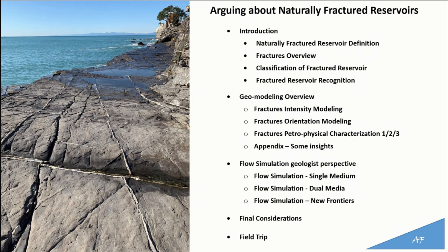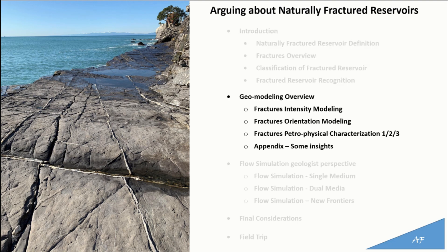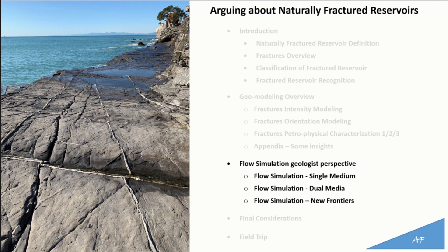The presentation can be subdivided into three groups. The first group tries to make a general introduction to the subject and includes the definition of a naturally fractured reservoir, a geological overview of the fractures, and the classification of the fractured reservoir, as well as how a naturally fractured reservoir can be recognized. The second group focuses on geomodeling, discussing the modeling of both fracture intensity and orientation, and petrophysical characterization, including some insight into more challenging subjects. In the third part we move to a quick overview, from the geologist's perspective, of the different approaches utilized for flow simulation — single medium, dual media, and the new frontiers.